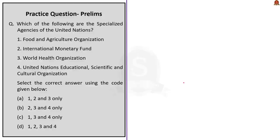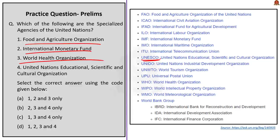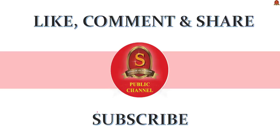This question asks which of the following are specialized agencies of the United Nations. UN specialized agencies are international organizations working with the UN in accordance with relationship agreements. Totally there are 17 specialized agencies, and among them the Food and Agricultural Organization, the IMF, the World Health Organization, and UNESCO are included. Therefore, the right option is option D — that is 1, 2, 3, and 4. The list of mains questions is displayed below; you can write your answers and post them in the comment section. With this we have come to the end of today's Hindu News Analysis. If you like the video, don't forget to like, comment, and share, and do subscribe to Shankar IAS Academy YouTube channel for more updates regarding UPSC Civil Services exam preparation.